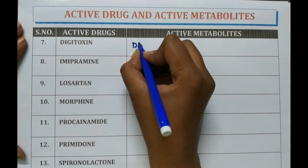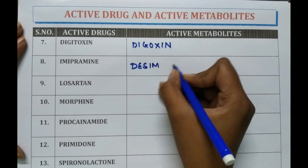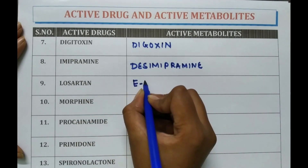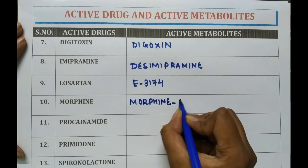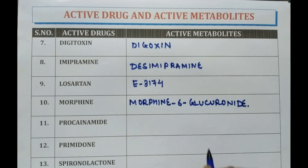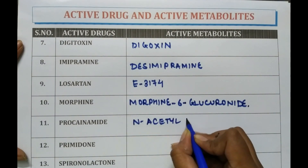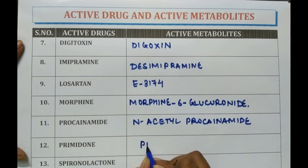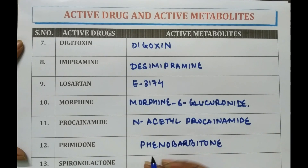Digitoxin is converted into digoxin in the body. Imipramine is converted into desimipramine. Losartan is converted into E3174. Morphine is converted into morphine-6-glucuronide. Procainamide is converted into N-acetylprocainamide. Primidone is converted into phenobarbitone. Spironolactone is converted into canrenone.